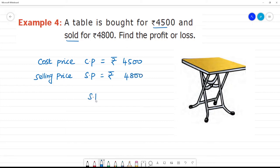Here we see SP is greater than cost price. When selling price is greater than cost price, what do we get? Profit.